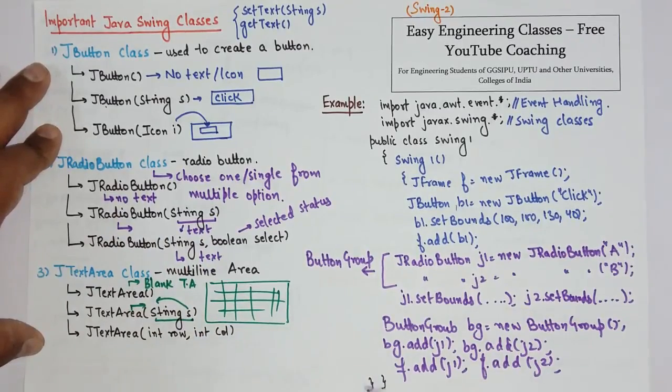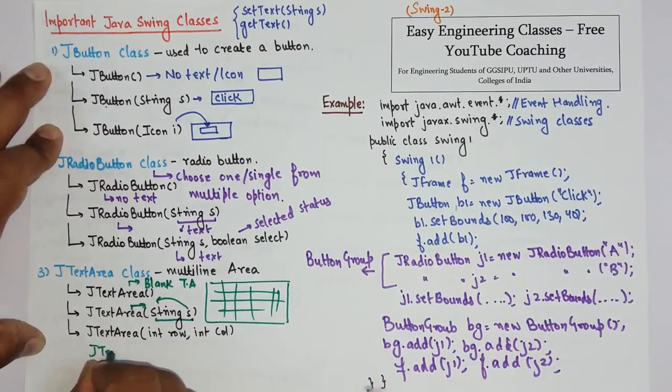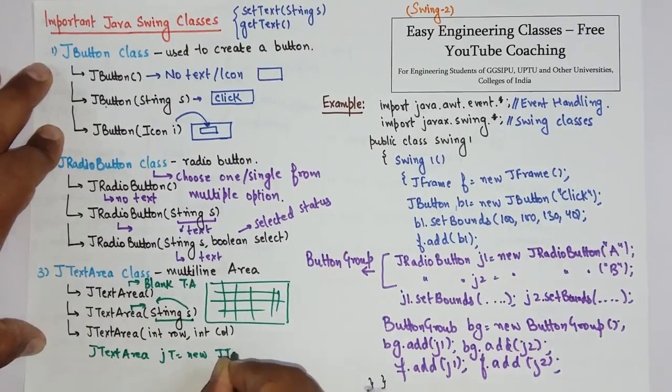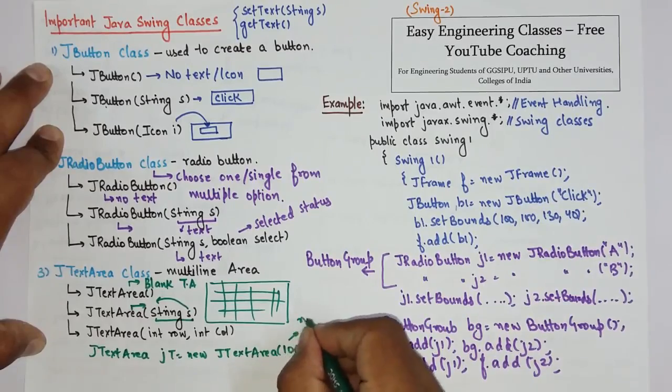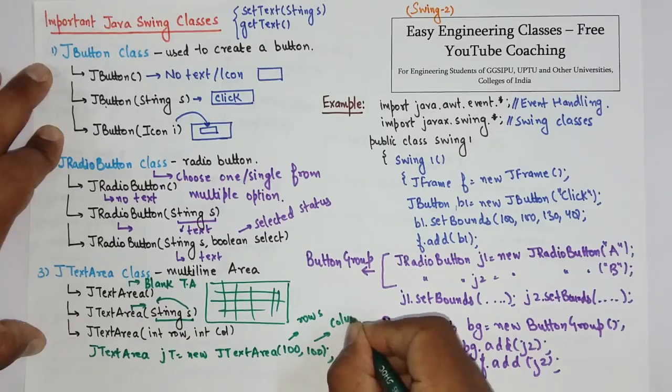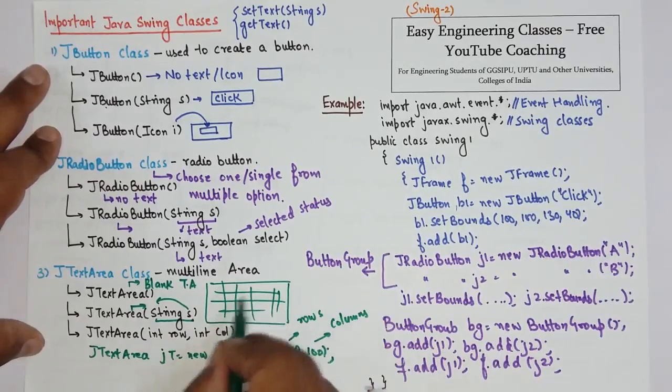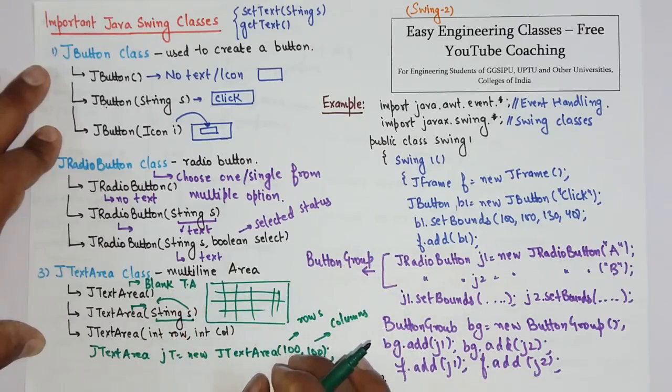Now let's see how you can create JTextArea in Swing. To create a JTextArea you have to create an object of JTextArea, and suppose I am specifying 100 comma 100. So this 100 are the number of rows and these are the number of columns. Actually this is the specified size of the text area as rows and columns.